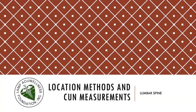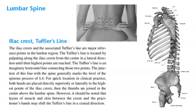Now, let's go to the lumbar spine for location methods and tune measurements. Iliac crest, Tuffier's line. The iliac crests and the associated Tuffier's line are major reference points in the lumbar region. Tuffier's line is located by palpating along the iliac crests from the center in a lateral direction until their highest points are reached. Tuffier's line is an imaginary horizontal line connecting those two points.